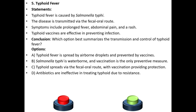Fifth question: Typhoid fever. Typhoid fever is caused by Salmonella typhi. The disease is transmitted via the fecal-oral route. Symptoms include prolonged fever, abdominal pain, and rash. Typhoid vaccines are effective in preventing infection.